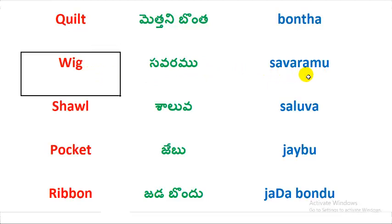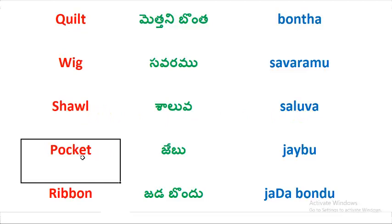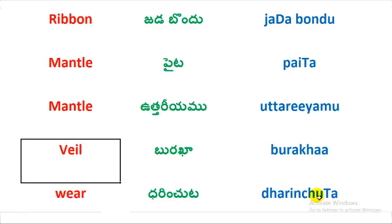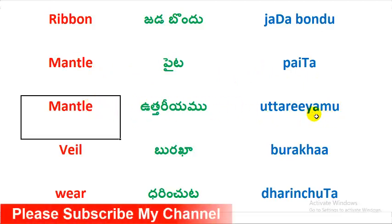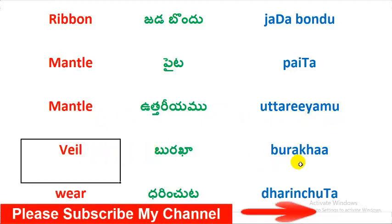Wig — Sawaramu. Shawl — Salwa. Pocket — Jeebu. Ribbon — Zedapondu. Mantle — Pita. Another meaning: Mantle — Uttarayamu. Wear — Gurkha.